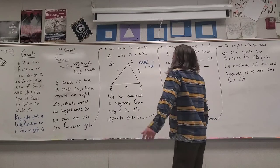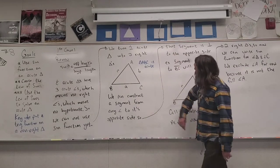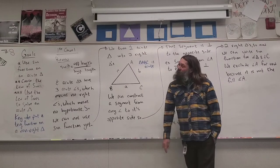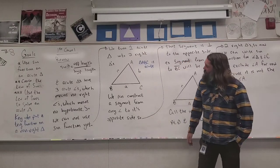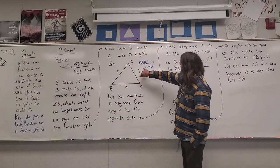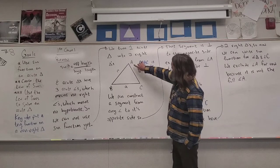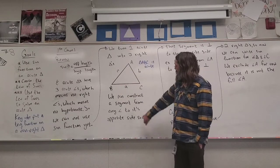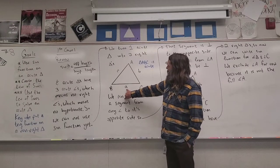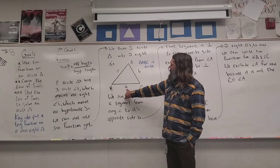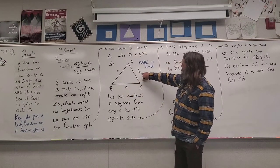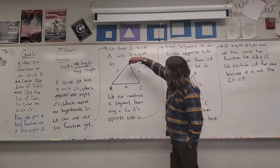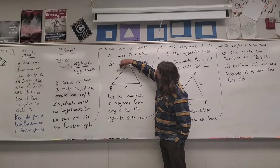However, we can turn one acute triangle into two right triangles. Let's look at an example — triangle ABC is acute. Here's angle A, angle C, and angle B. They're all between 0 and 90 degrees. The opposite length of angle A is side A, the opposite length of angle B is side B, and the opposite length of angle C is side C.